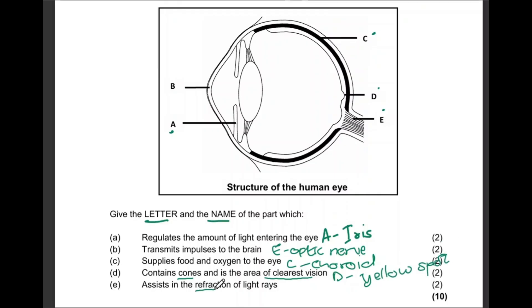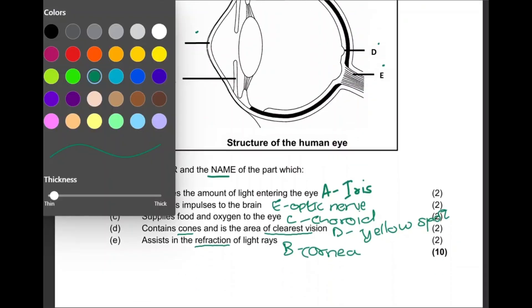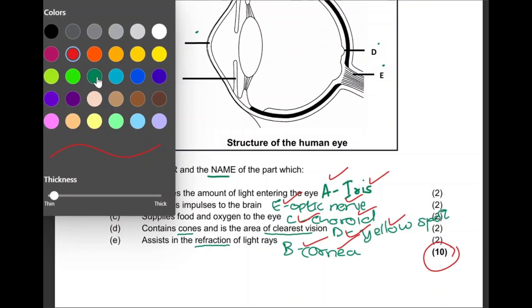The part that assists in the refraction of light rays is B, the cornea. Remember, they asked for the letter and name, so it will be independent marking for both — one mark for the letter and one for the name. Letter, name, letter, name — 10 marks total. Let's move to the next question.